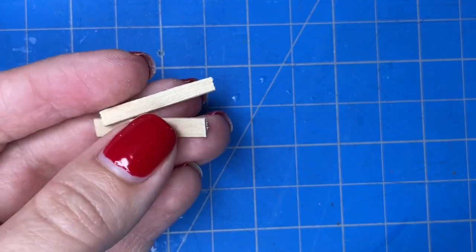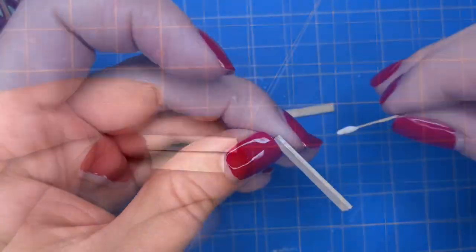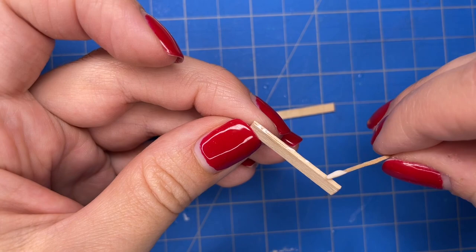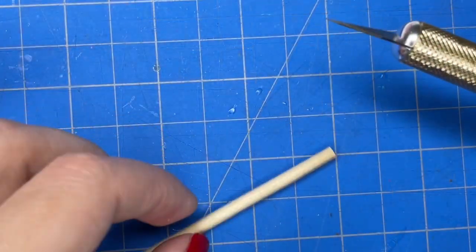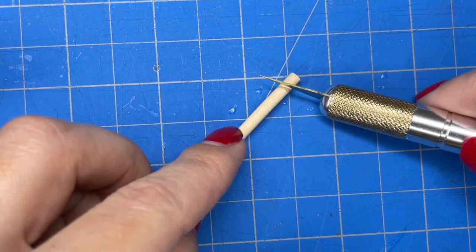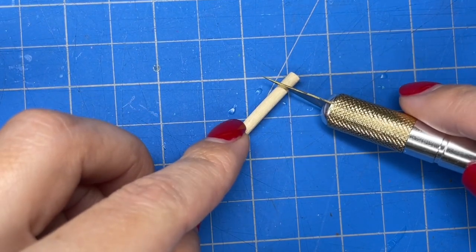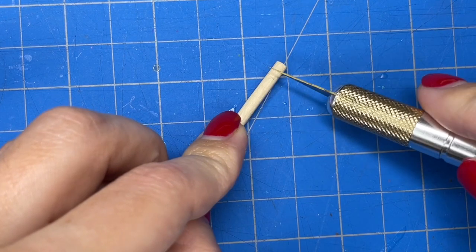I cut one of the coffee stirs a little bit smaller just so that it is small enough to fit in the room and then I used some wood glue to glue the two pieces together. I then took a round wooden rod and cut two small pieces from it and those are going to become the legs of the table.